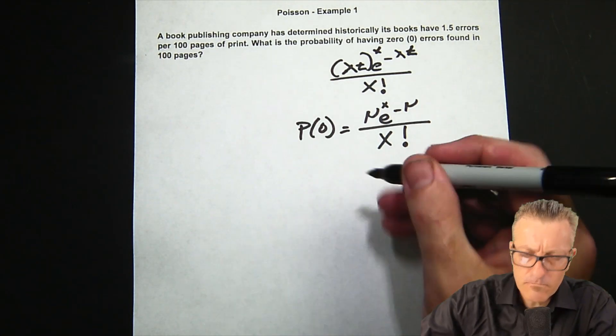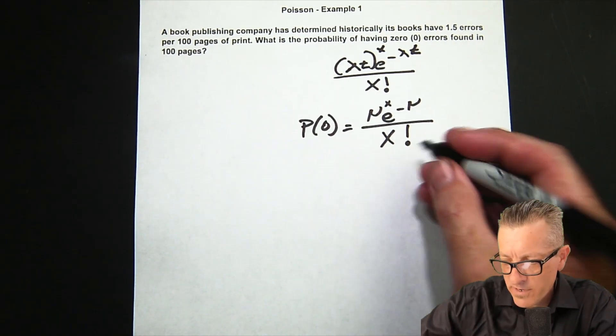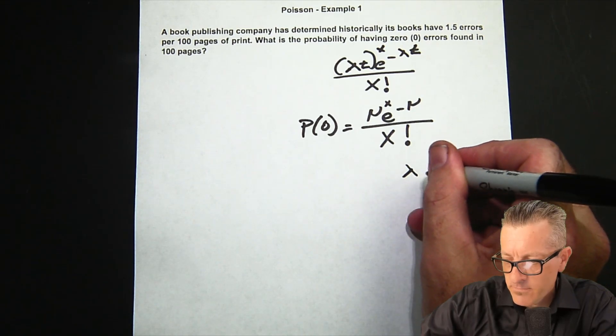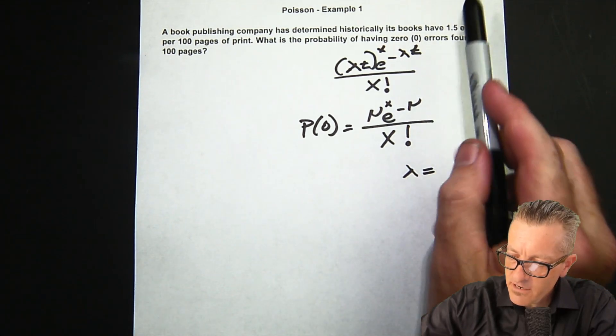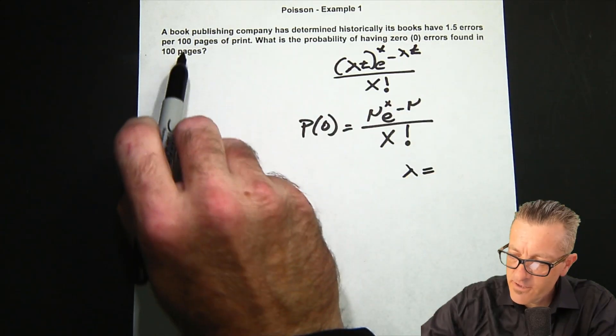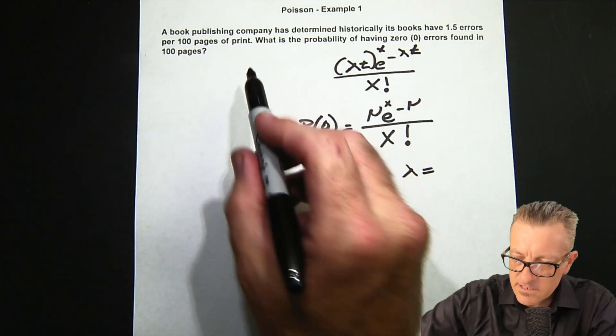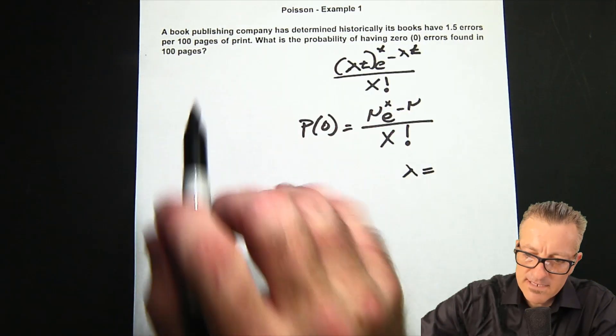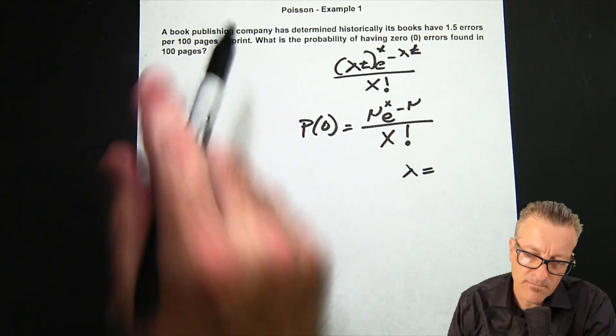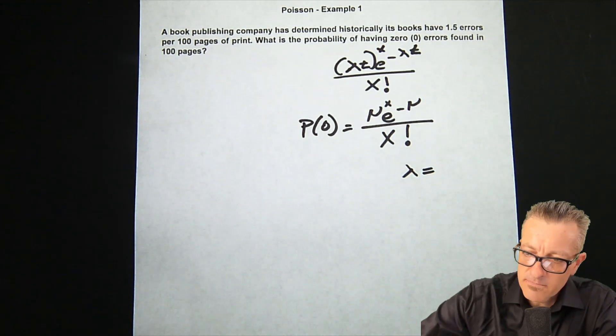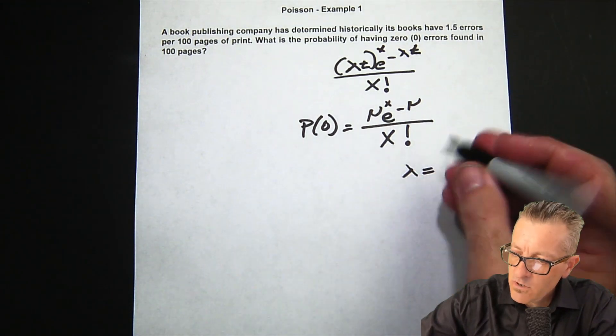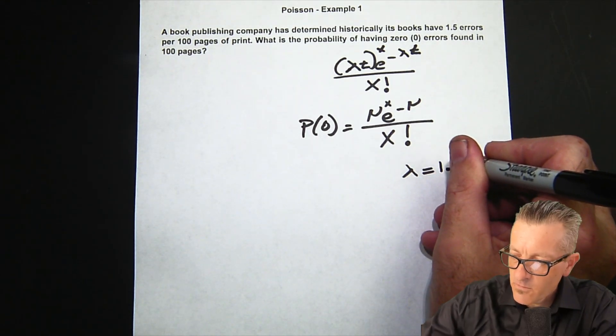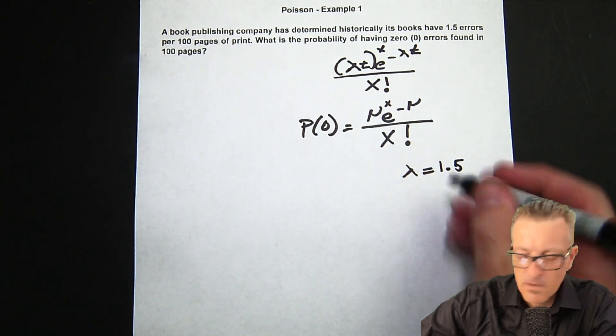Okay, we'll get started. We'll write out what we know: lambda is 1.5 errors per 100 pages of print. It asks what is the probability of having zero errors found in 100 pages. We're in essentially the same range, so that makes it really easy for us.